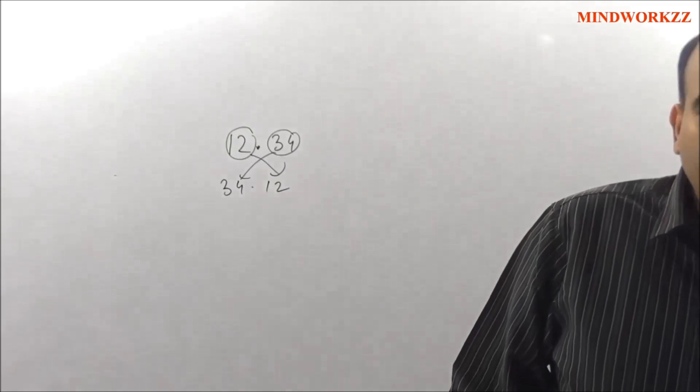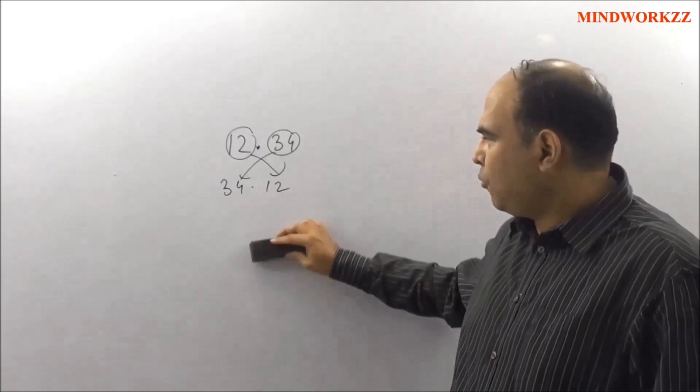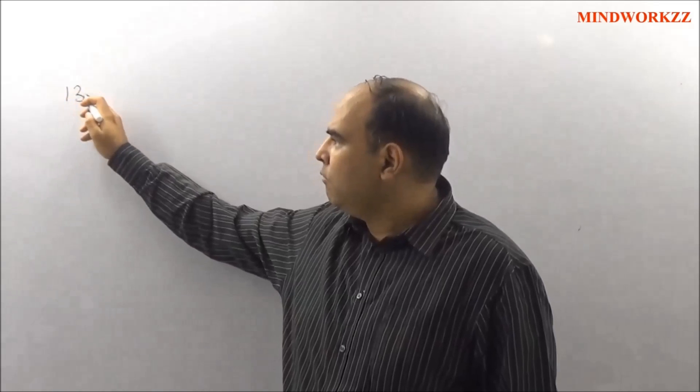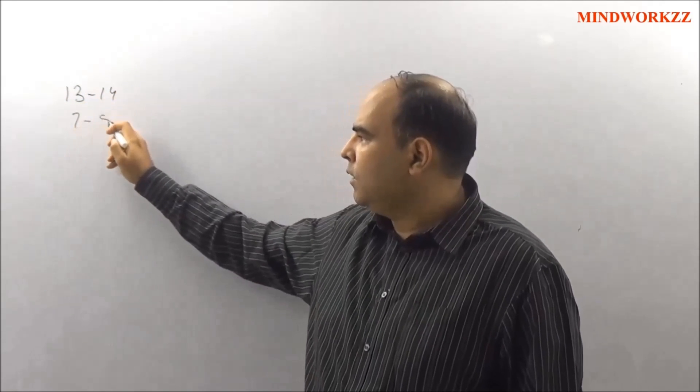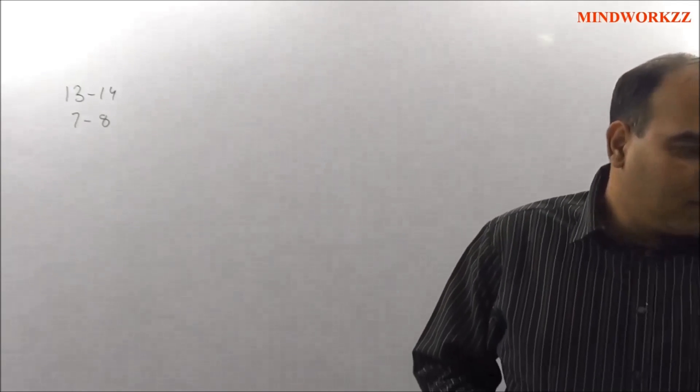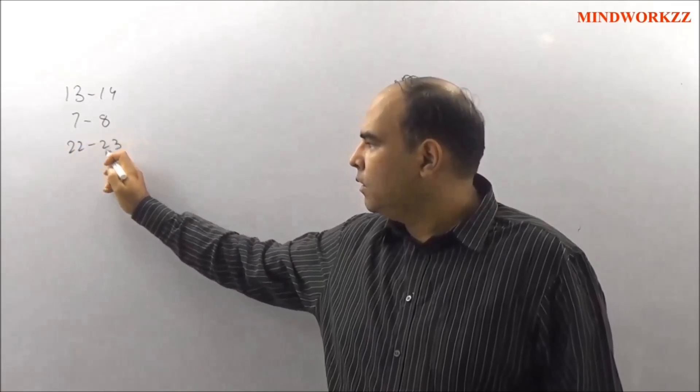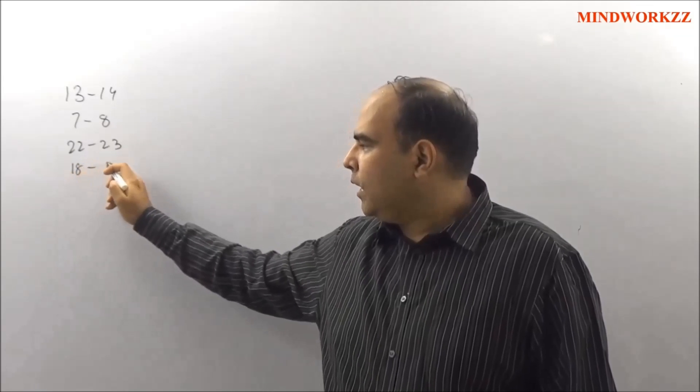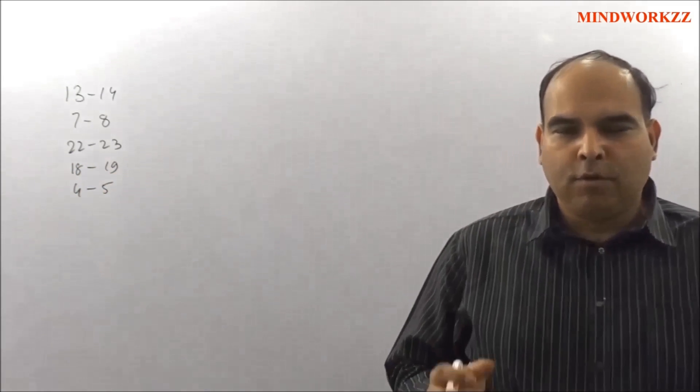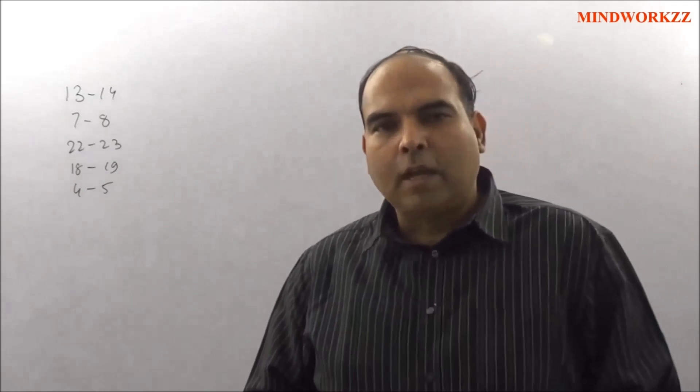If you try to solve this question through any conventional methods, I'm quite sure if you've paused this video earlier and tried to do it on your own, you would have struggled to do this. And we obviously have options for the amount: 13 to 14, 7 to 8 in terms of the rupees, 22 to 23, 18 to 19, and 4 to 5. The question is asking us between which range was the actual check.